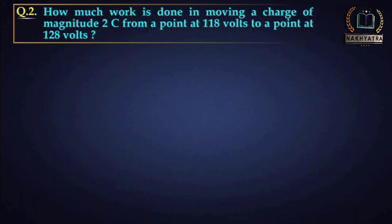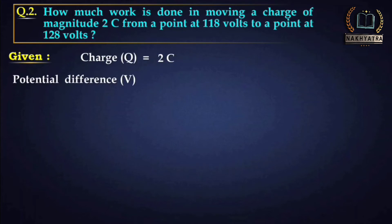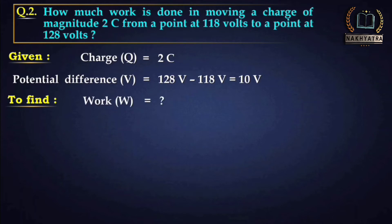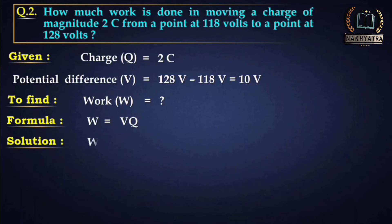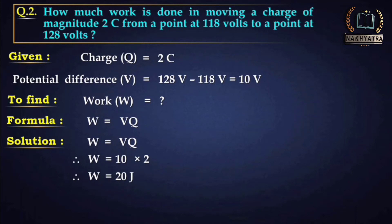Question 2: How much work is done in moving a charge of magnitude 2 Coulombs from a point at 118 volts to a point at 128 volts? Given: Q = 2 C, V = 128 − 118 = 10 volts. Formula: W = V × Q. Putting the values: W = 10 × 2 = 20 joules. Therefore the work done is 20 joules.